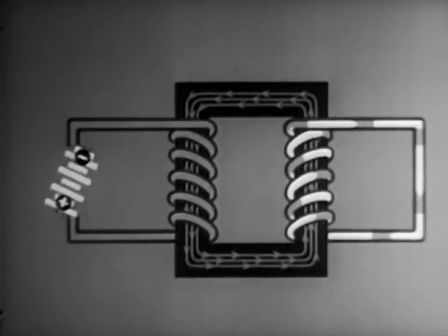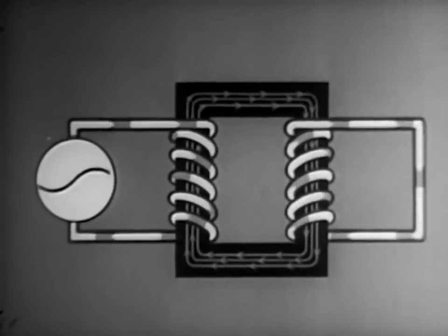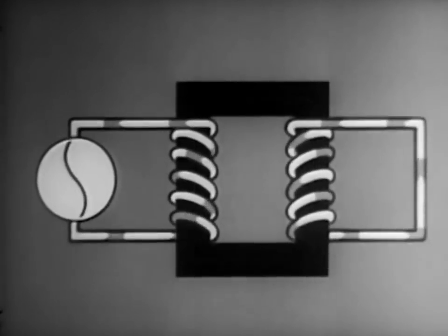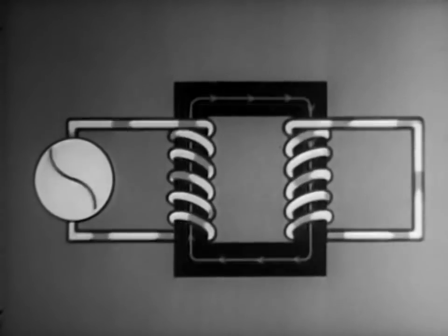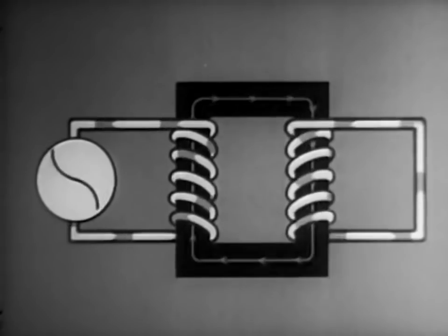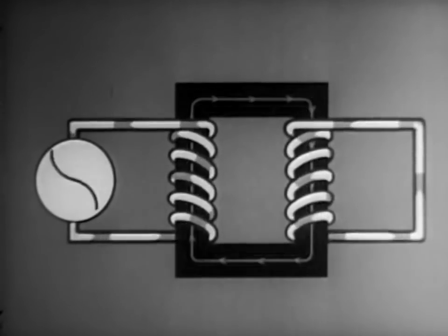By replacing the battery with an AC generator, we get a true alternating current, which is reproduced almost exactly in the second winding. Here's the second important fact about a repeating coil. It repeats alternating current practically unchanged.